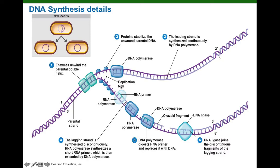This opposite strand is a lot harder to synthesize because of the orientation of the template strand. Our new DNA has to be synthesized in a 5' to 3' direction, anti-parallel to the template, and that's going to be a problem here. The cells have evolved another way of synthesizing DNA called discontinuous DNA synthesis, and this new strand will be called the lagging strand.